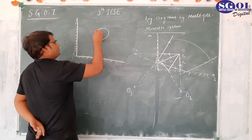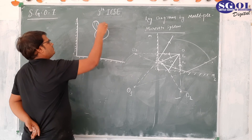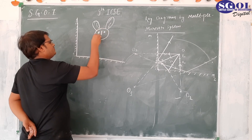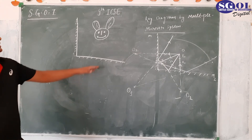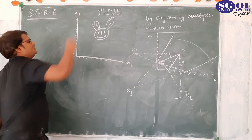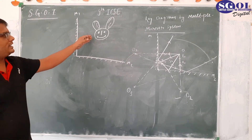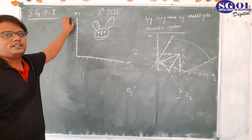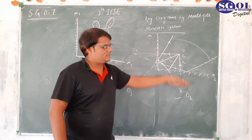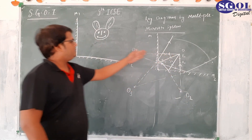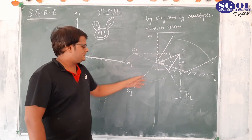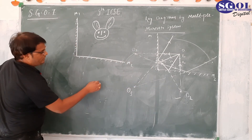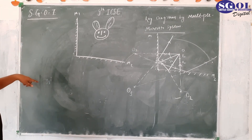Let's illustrate with a Mickey Mouse figure as our object. This is mirror M2 and this is mirror M1. The Mickey Mouse figure acts as the object, and a total of three images will be formed. One image will be just beneath it, one will be to the left, and the third will be at the junction of the two mirrors.